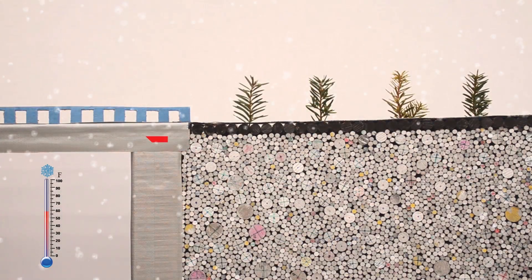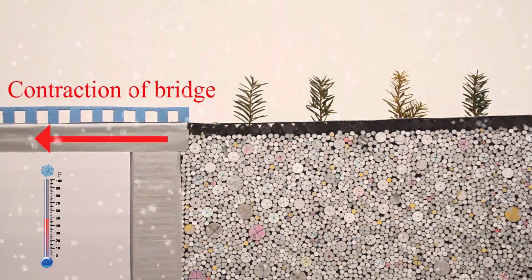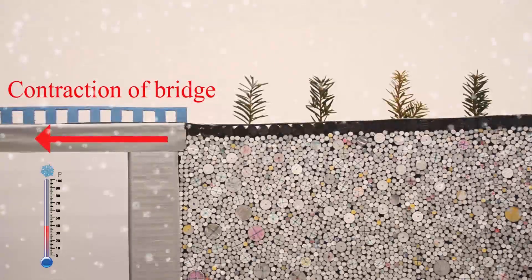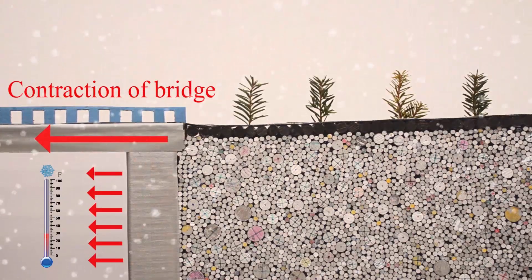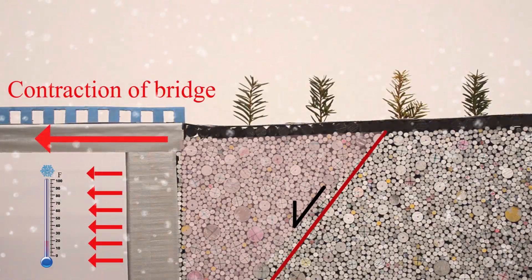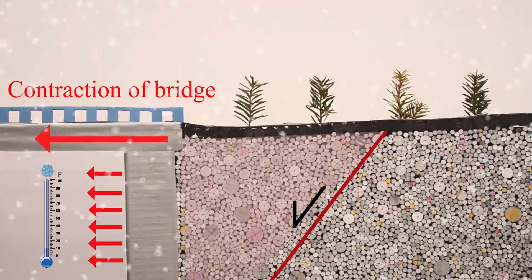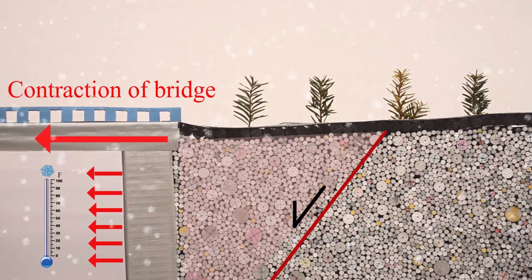During the winter season, the bridge contracts with the lowering temperature, causing the abutment to move inward and away from the retained soil. In this case, an active earth pressure soil wedge develops with the soil slumping inward and downward.